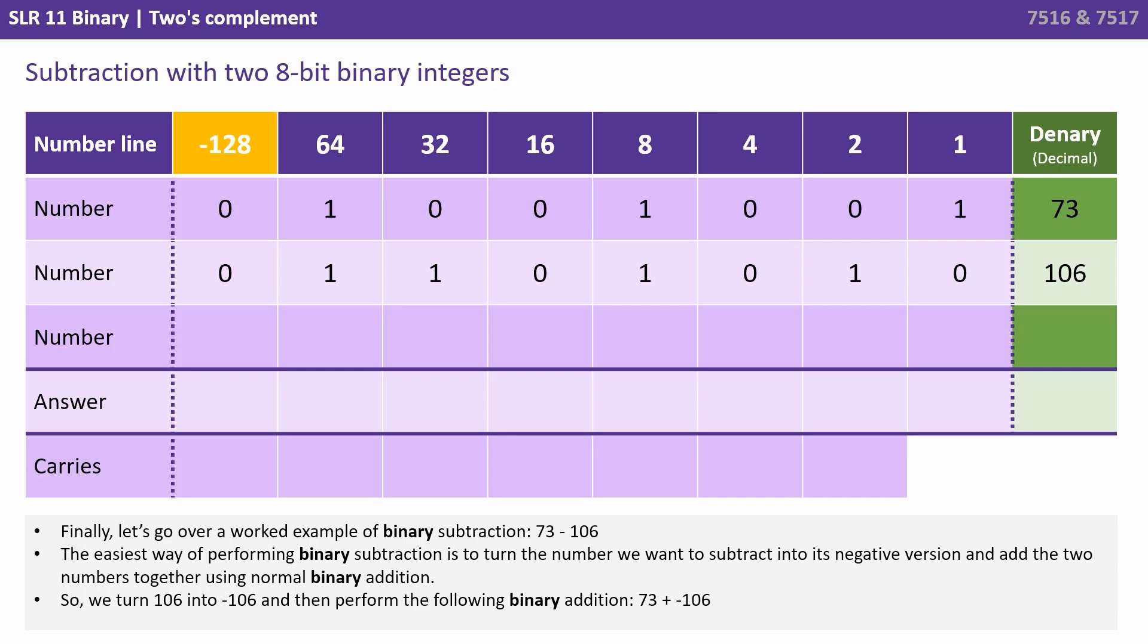So we've written out 73 and we've written out 106 and we're quite familiar now with how to do that. We turn 106 into its negative version. So we copy each digit out, starting with the least significant bit, up to and including the first one. Then we swap all the others over. We've now got the negative version of 106.